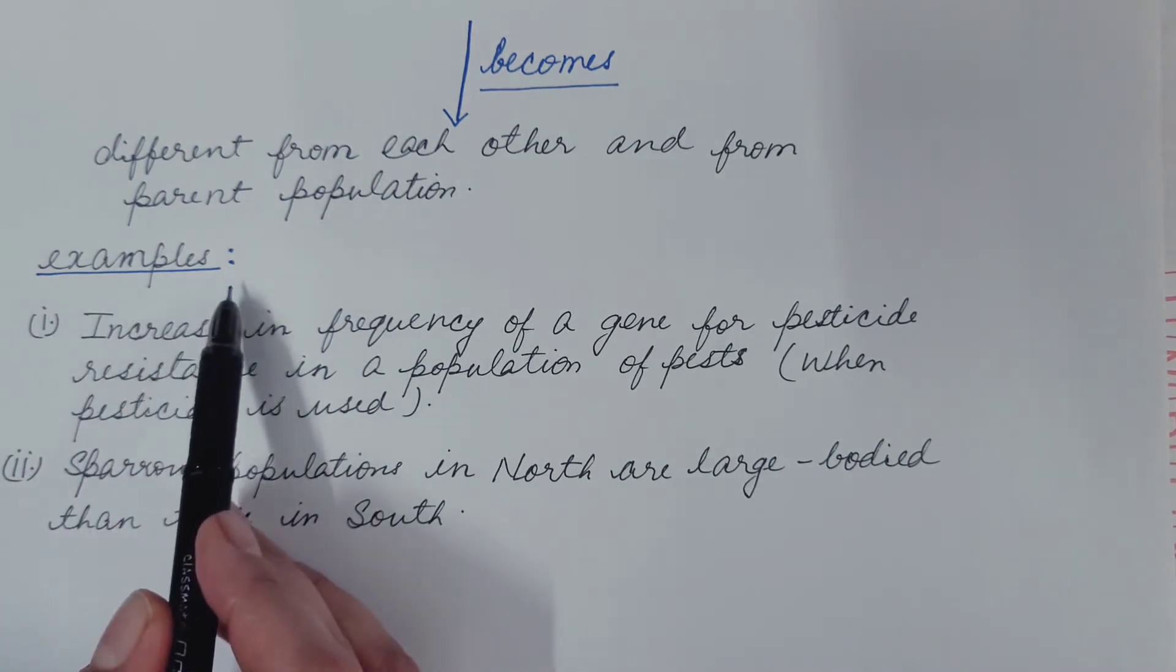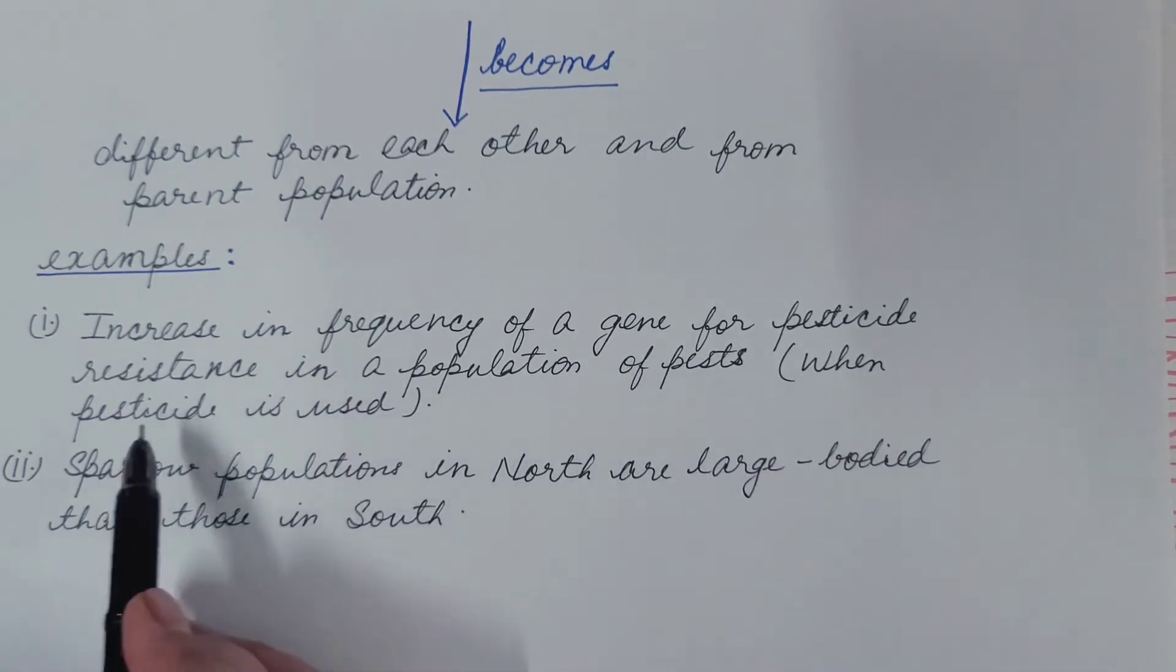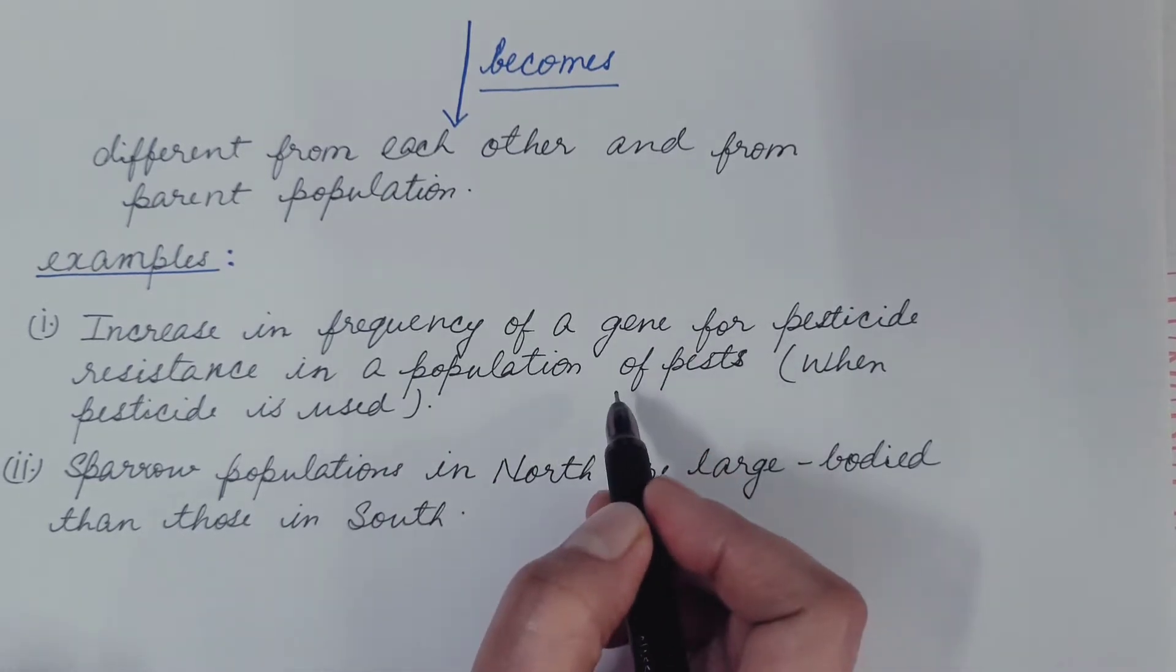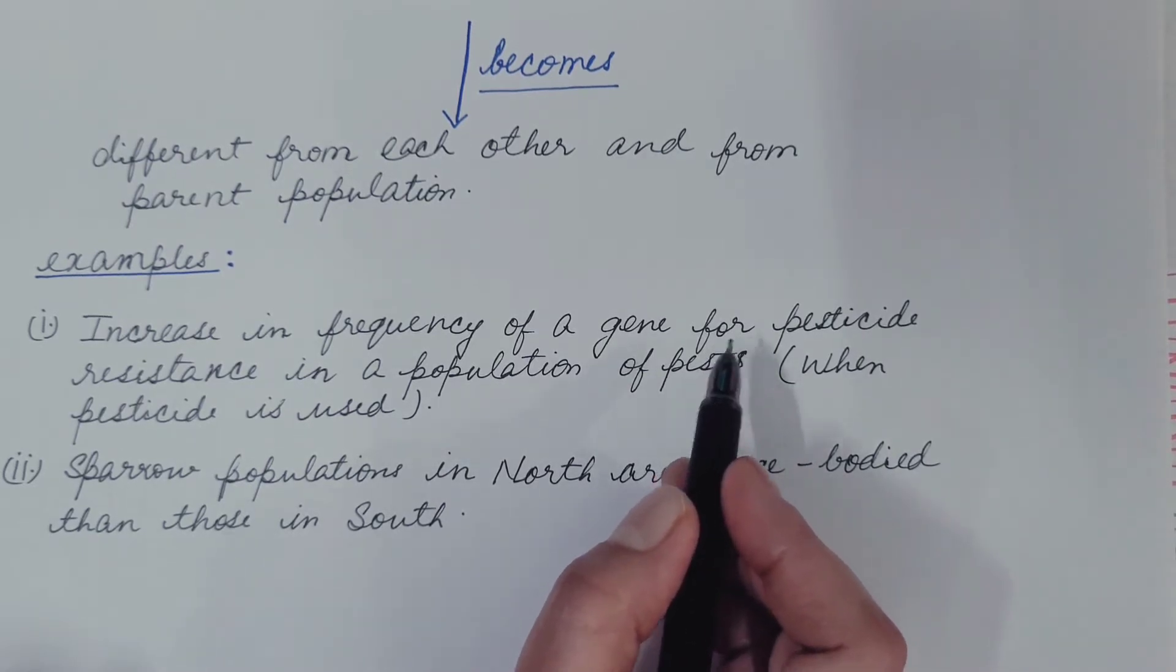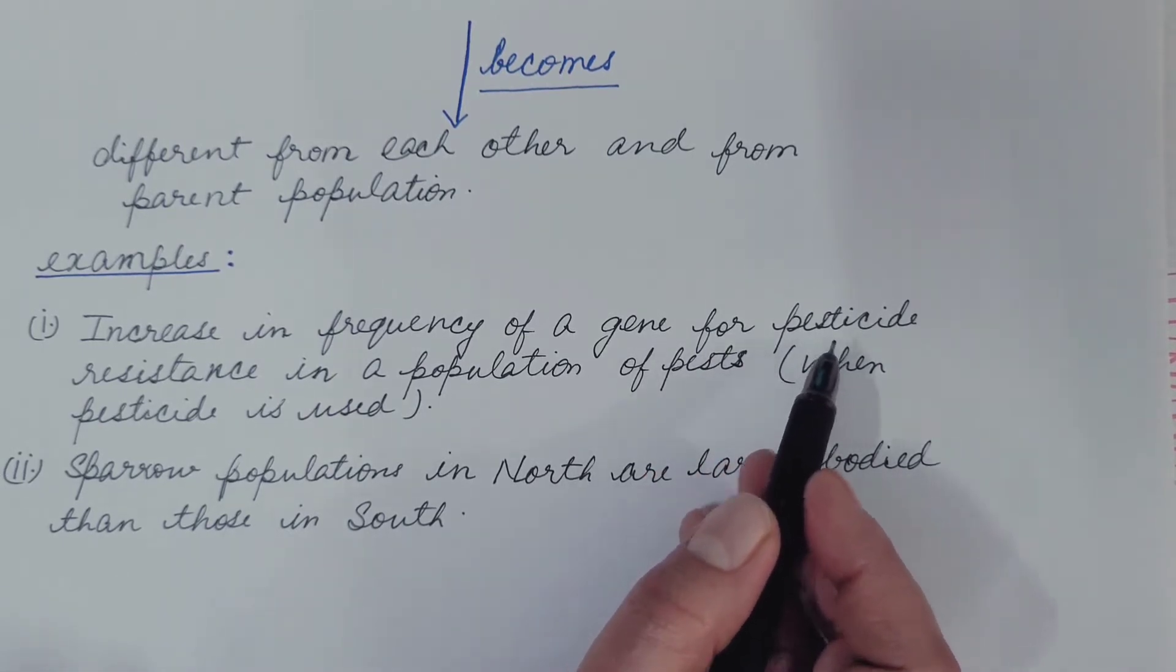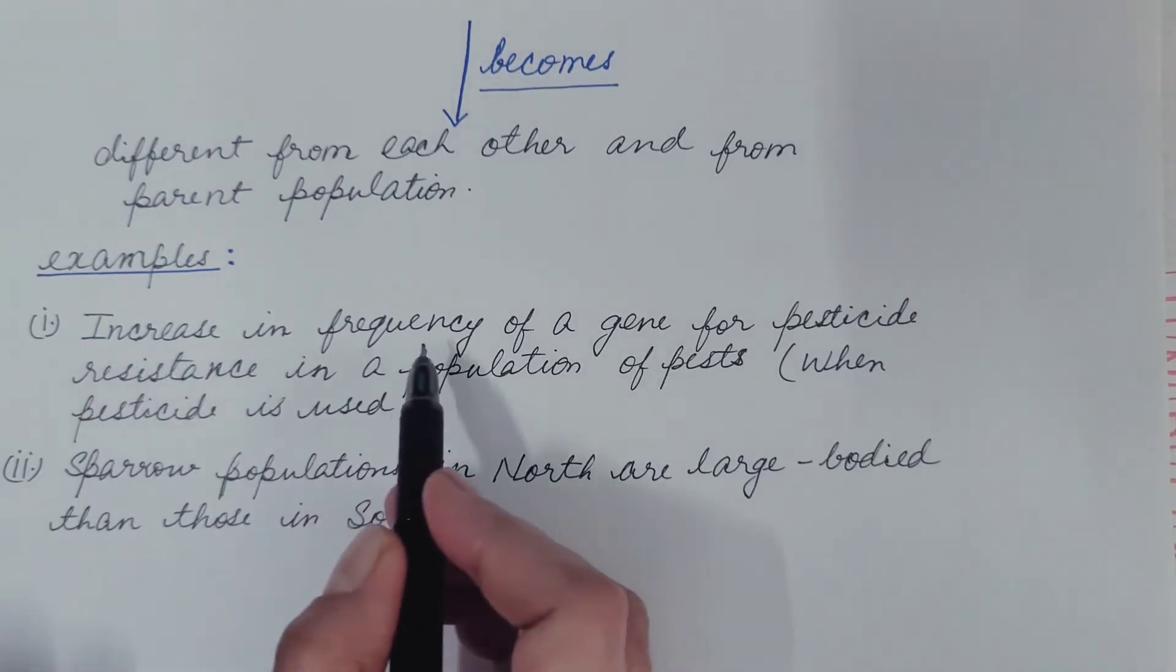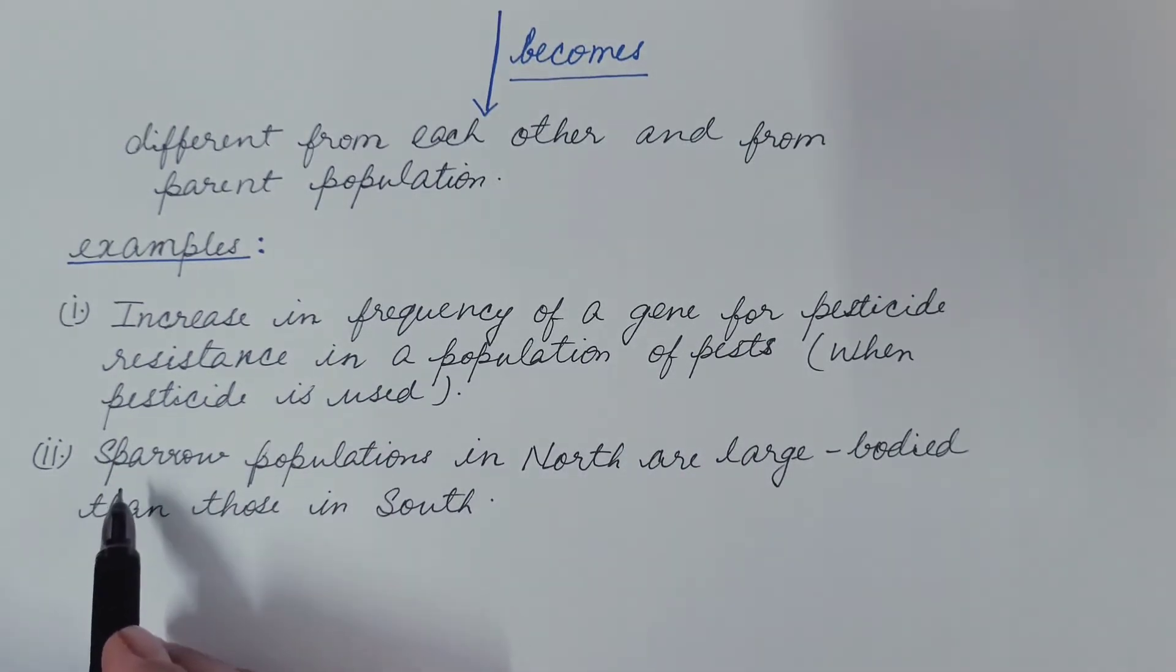So let us see some examples. Increase in the frequency of gene for pesticide resistance in a population of pests when pesticide is used. So in the population of the pest when pesticides are used for a few generations, then initially sensitive pests are killed due to the pesticides and those that are resistant survive. So there is differential survival. Then these reproduce and produce the offspring that are pesticide resistant known as differential reproduction. As a result of which there is increase in the frequency of gene for pesticide resistance in a population of pests.